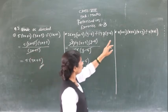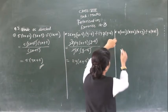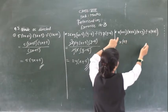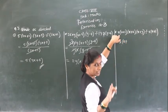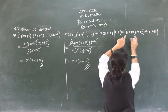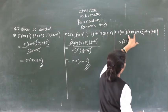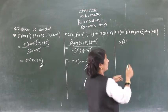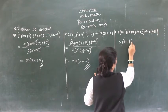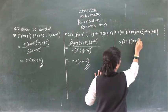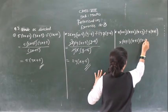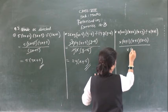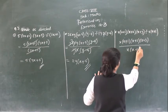Now next is: x(x+1)(x+2)(x+3) divided by x(x+1). See here: this x with this x gets cancelled, this (x+1) and this (x+1) get cancelled. So finally you will get (x+2)(x+3).